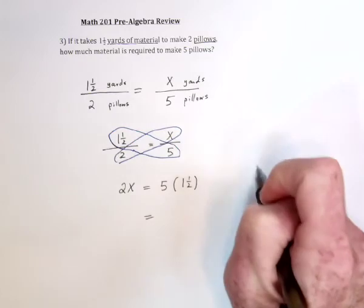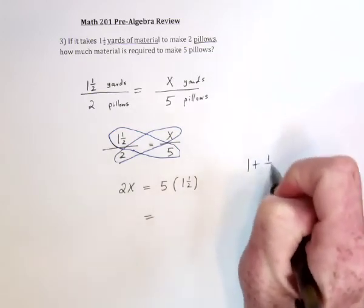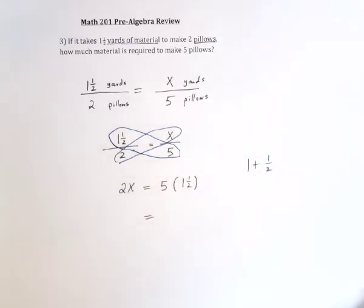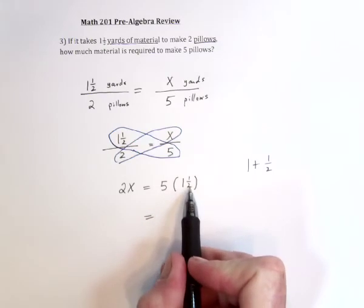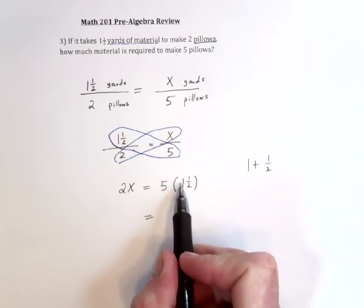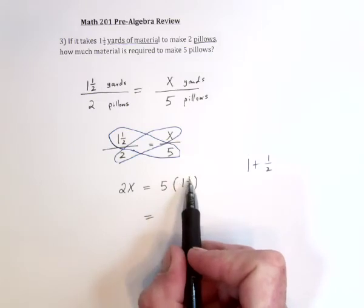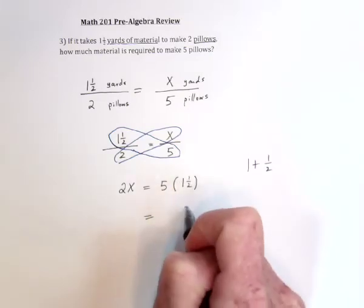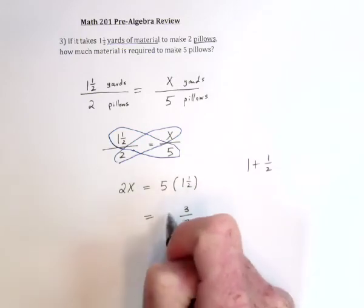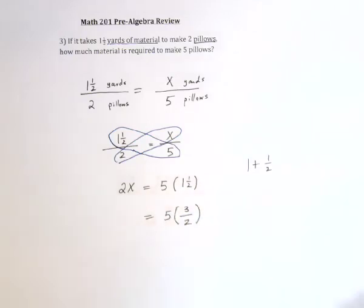So one and a half means one plus a half. And you could do this idea of converting it, multiply these two, the two times one, so that's two, and then whatever you get, add it to the top, and that's three. So it's three over two inside the parentheses.